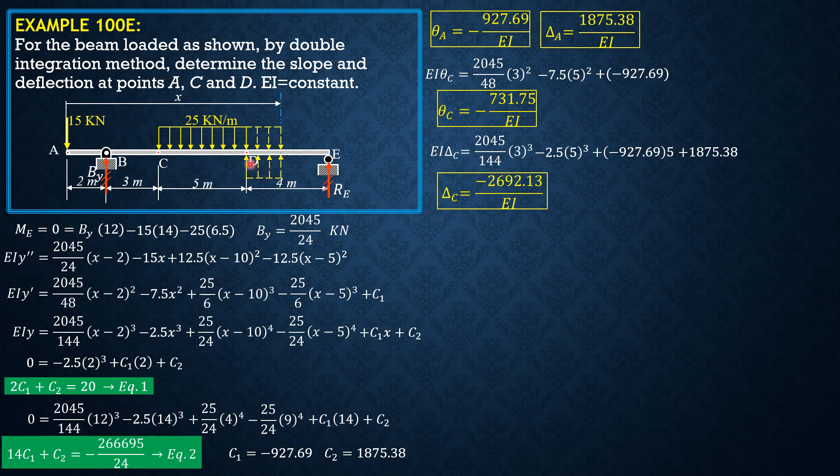For theta D, set X equals 10. So EI theta D is 2045 over 48 times 8 squared minus 7.5 times 10 squared minus 25 over 6 times 5 cubed plus negative 927.69. Solving for theta D, theta D is 578.14 over EI.